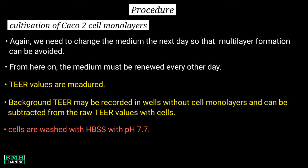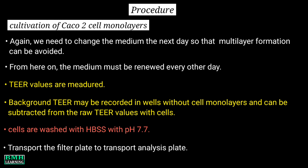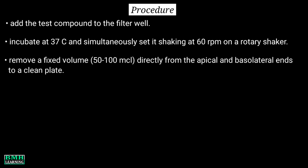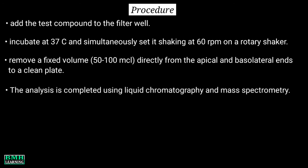Transport the filter plate to the transport analysis plate, then add the test compound to the filter well. Once the buffer and drug have been added, incubate at 37°C and simultaneously set it shaking at 60 rpm on a rotary shaker. Once the incubation period is over, remove a fixed volume of around 50 to 100 microliters directly from the apical and basolateral ends to a clean plate. The analysis is completed using liquid chromatography and mass spectrometry.